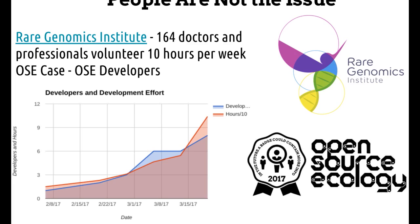I have a friend from the TED Fellows group. His name is Jimmy. He founded the Rare Genomics Institute, and he has 164 doctors and professionals volunteering 10 hours per week on his project. That's over 40 full-time equivalent volunteers — not just any people off the street, but high-level professionals and doctors.